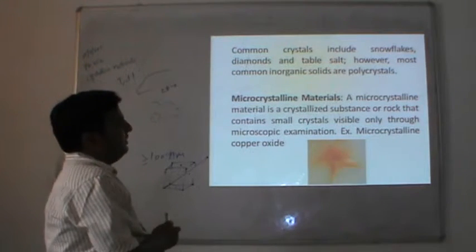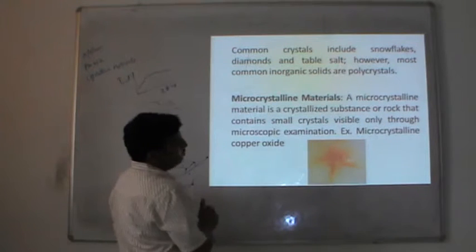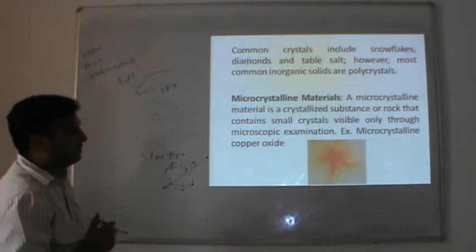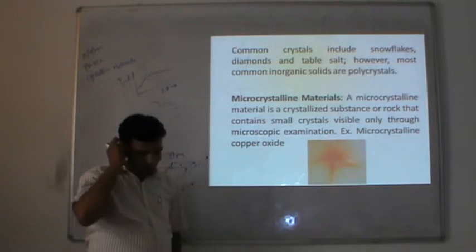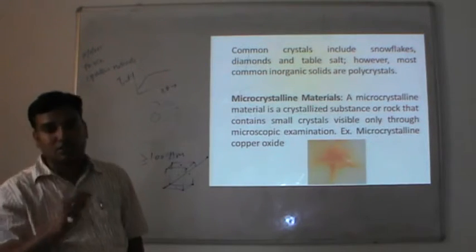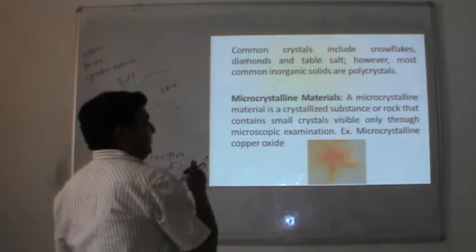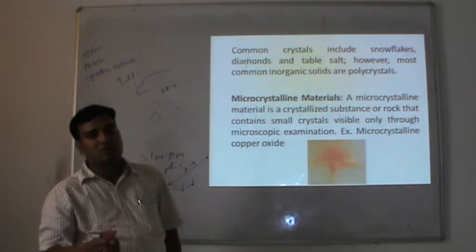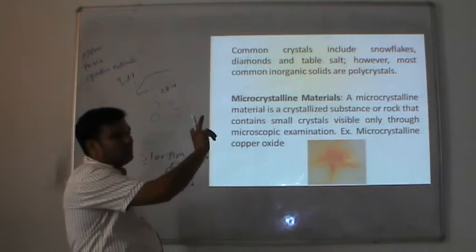A microcrystalline material is a crystallized substance or rock that contains small crystals visible only through microscopic examination. The best example is microcrystalline copper oxide. These are structures that are not observable with the naked eye — we need to observe them through microscopic examination, and they exist in very short-range crystalline structures.